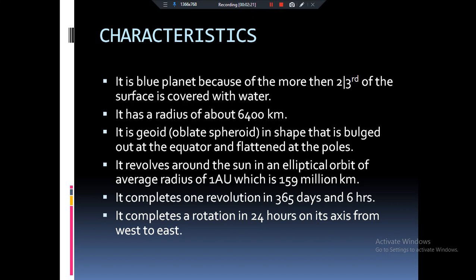Now, coming to the orbit of the earth. What is orbit? It is basically the path in which the earth is revolving around the sun. The average distance of the earth from the sun is one astronomical unit which is equals to 150 million kilometers.